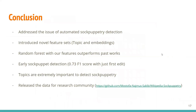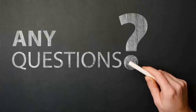In summary, we addressed the issue of automatic sock puppet detection in Wikipedia. We introduced novel features like topics and embeddings. Random Forest outperformed all previous work, and early detection is possible with just one edit at an F1 score of 0.73. LDA topics are a key contributor to our model. We have released all data for the future research community. Thank you all, and I welcome any questions.